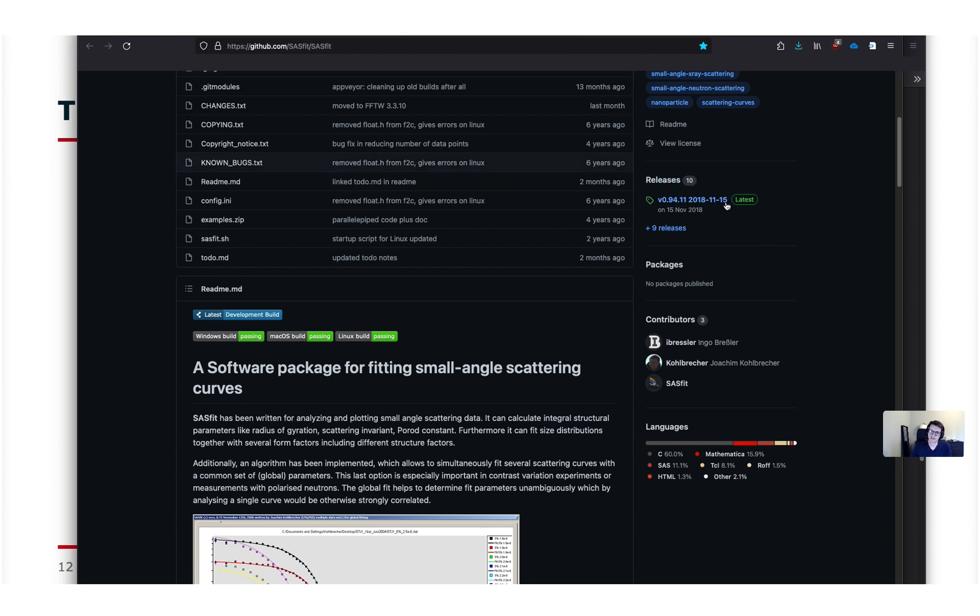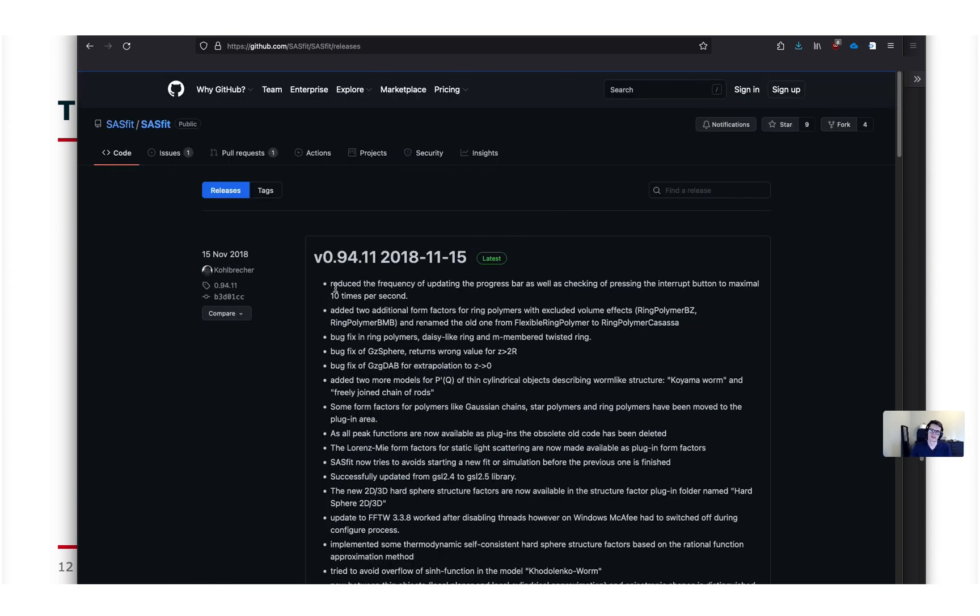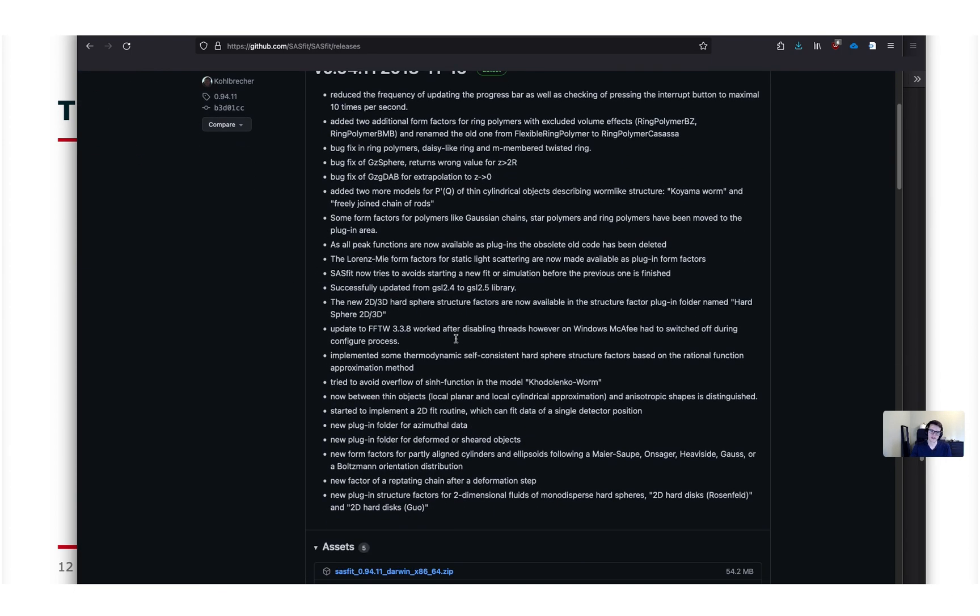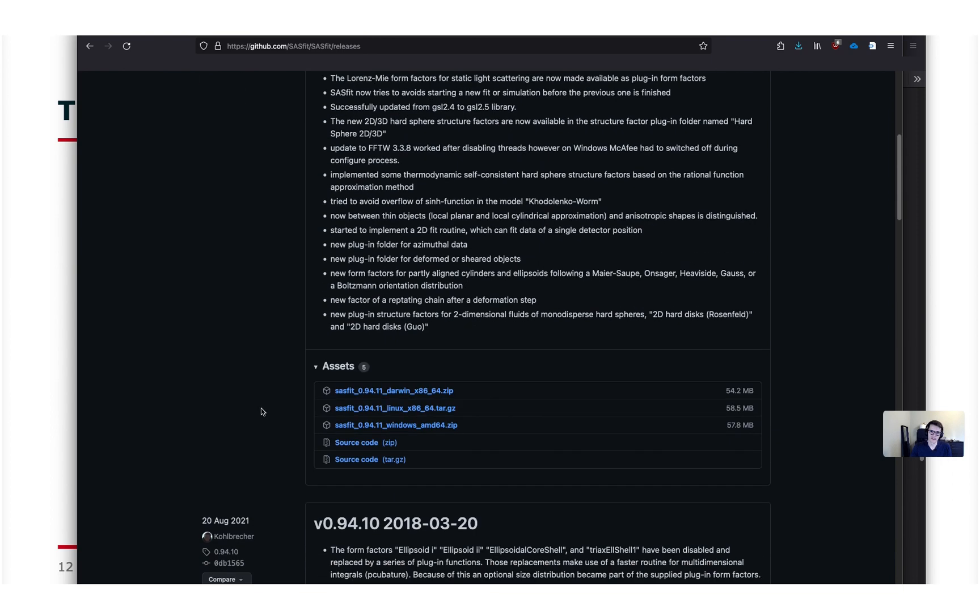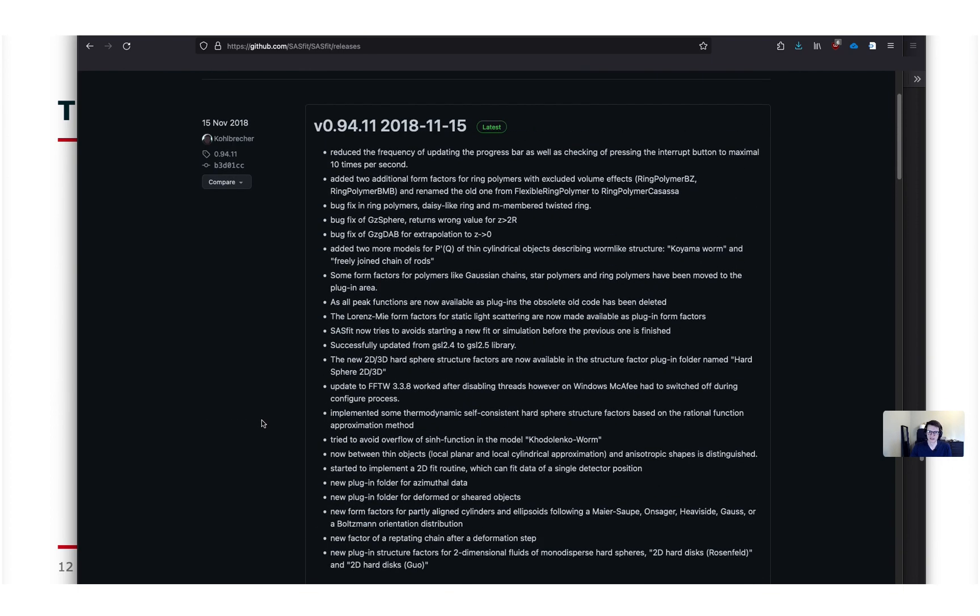If you click on release you get to the release pages. There's also often a quick overview of the changes in the program since the last version in a quick overview along with the links to the program version for the different platforms. The changes are basically very often motivated by the work of Joachim in his daily work for his users at his neutron scattering beamline and sometimes reflects what he is working on with his users.